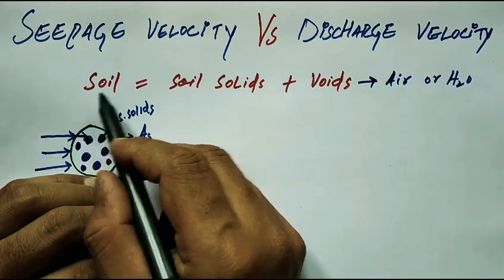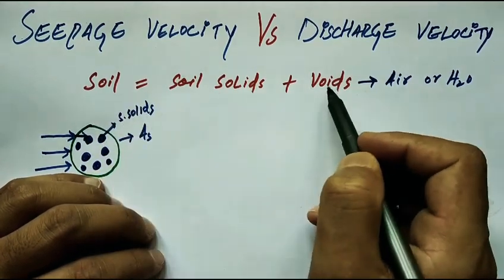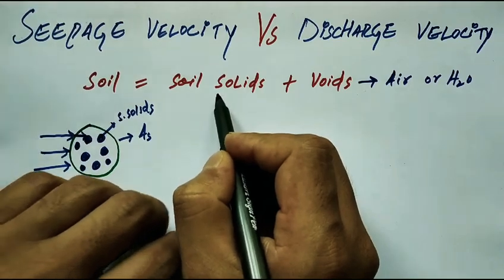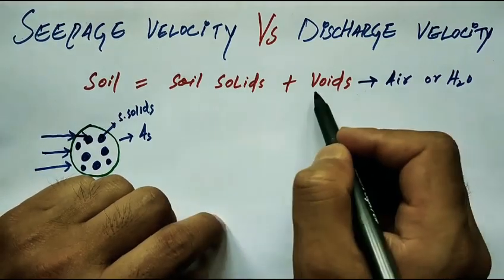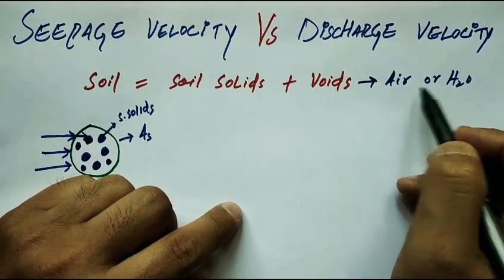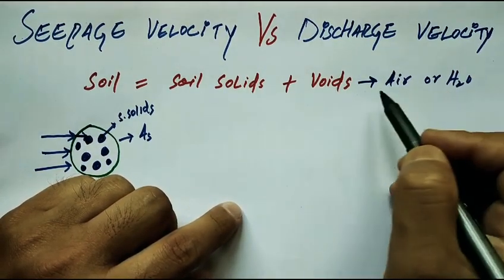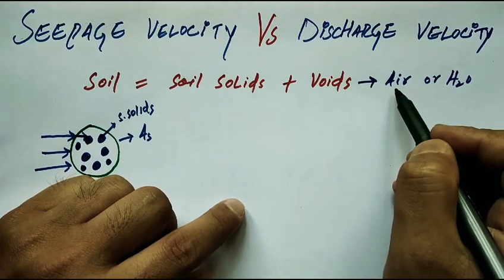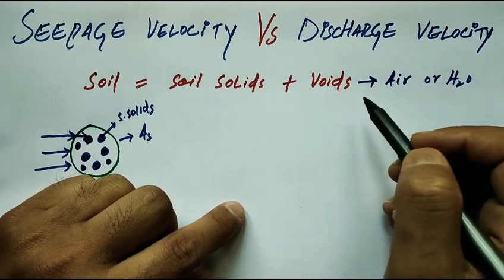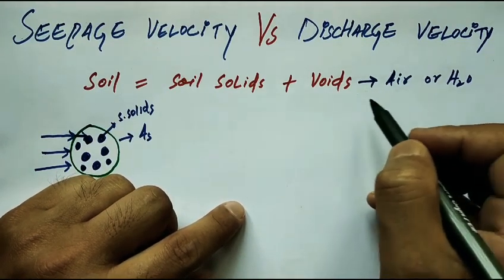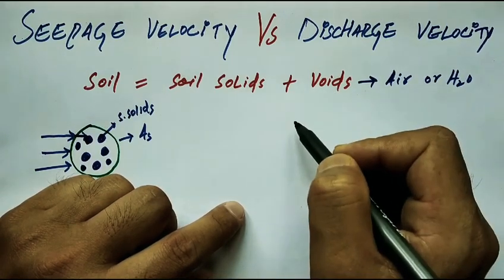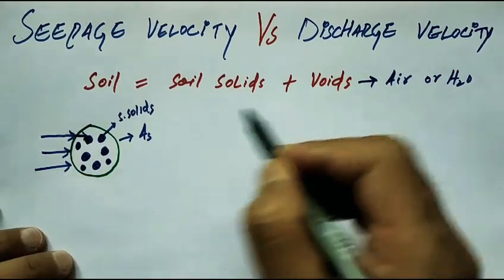Soil is made up of soil solids plus voids. Voids may contain air or water. When voids contain air only, the soil is called dry soil. When water is present in the voids, the soil is called saturated soil.